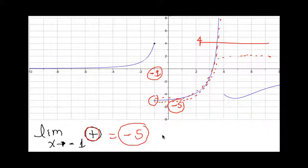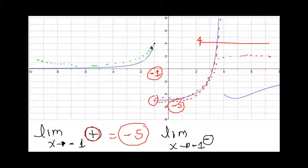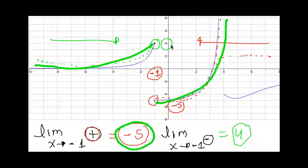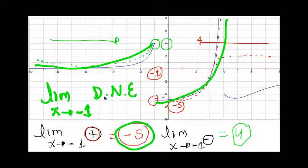What about if you have the same question, but now the limit of x approaching negative 1 is from the left? I'm going to come all the way from the left and get really close to the function approaching negative 1. The value of y is actually 4. Since the right side is getting to negative 5 and the left is getting to 4, the limit when x approaches negative 1 does not exist, because if both limits are not the same, the limit does not exist.